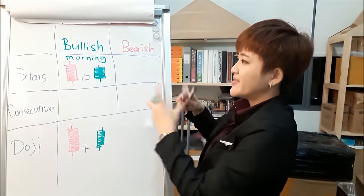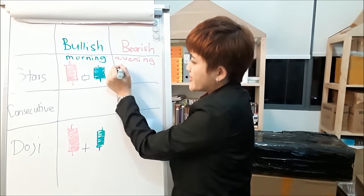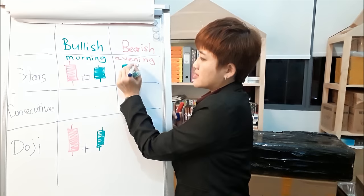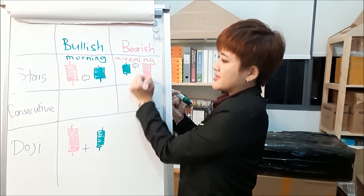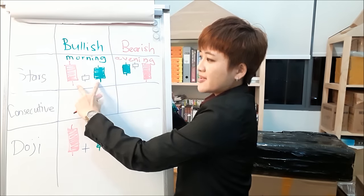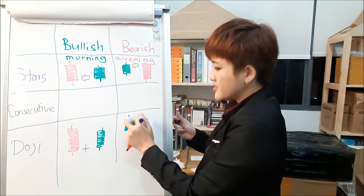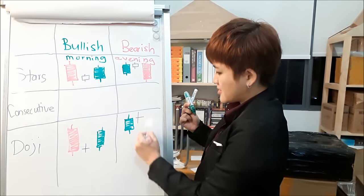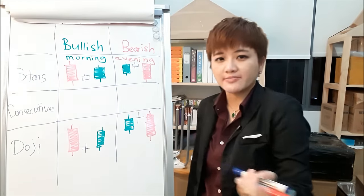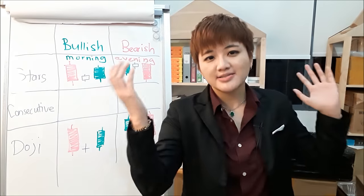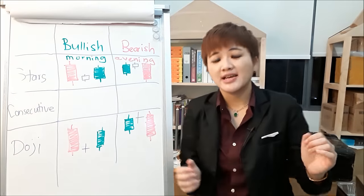The bearish equivalent is the evening star: a large green candle, followed by a smaller middle candle, followed by a big red candle larger than the first. The evening doji star is the same but with a doji as the middle candle and is a stronger bearish signal. Memory trick: morning star — the sun rises, price goes up; evening star — the sun sets, price goes down.